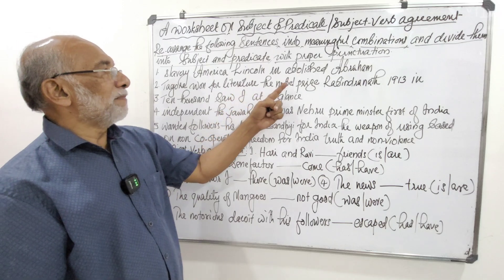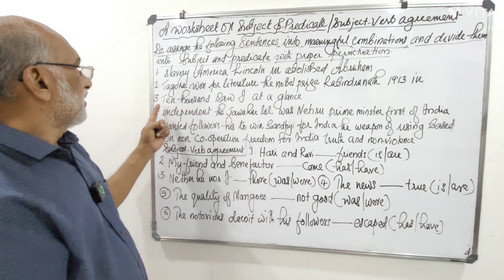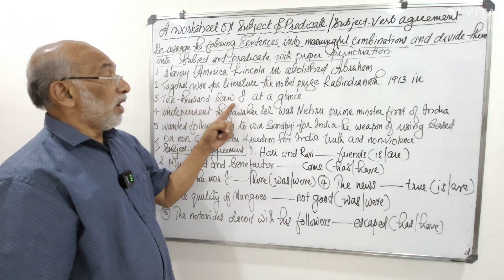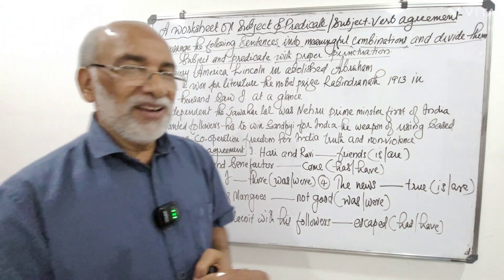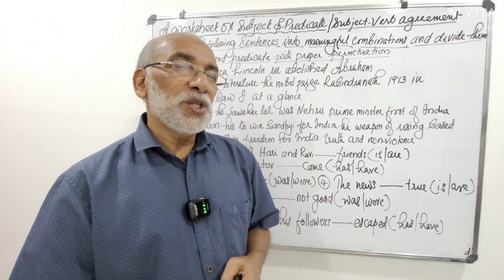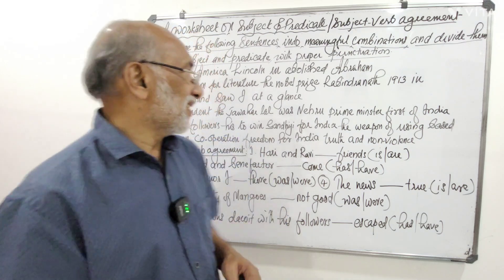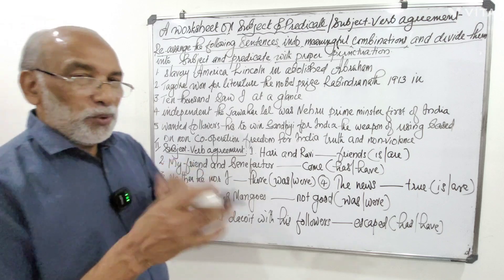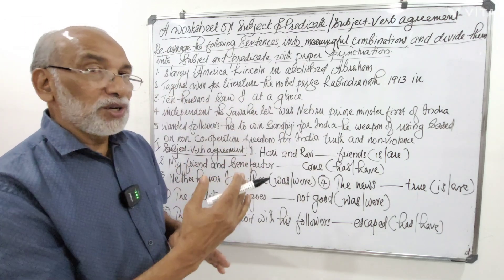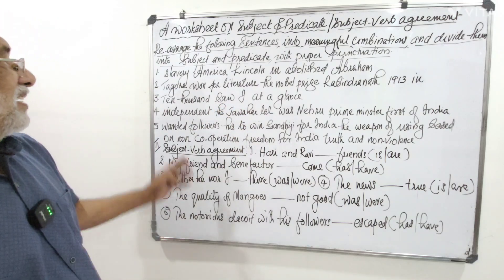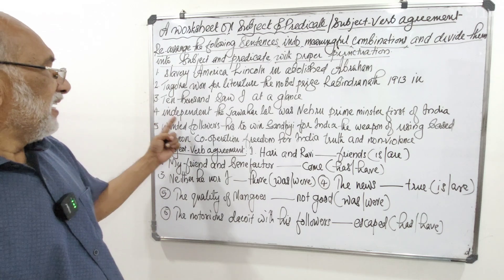The third one: 'ten thousand so I at a glance' — perhaps very familiar to you, a line from the famous poem 'Daffodils' by William Wordsworth. With poetic license it's been given in jumbled order; you put it in prose order.